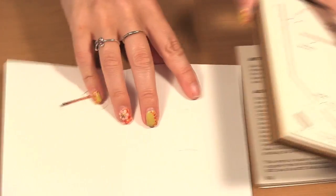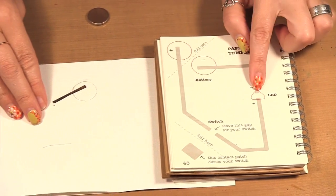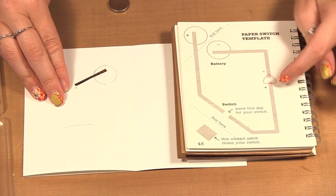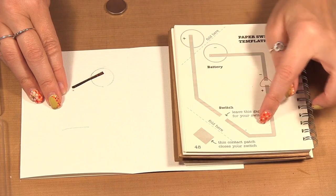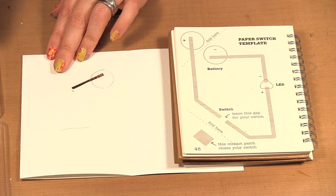So here we have if we follow along in the book we have from the battery to where the light will be. So now we need to do the light to the switch and that's where my switch is going to be.